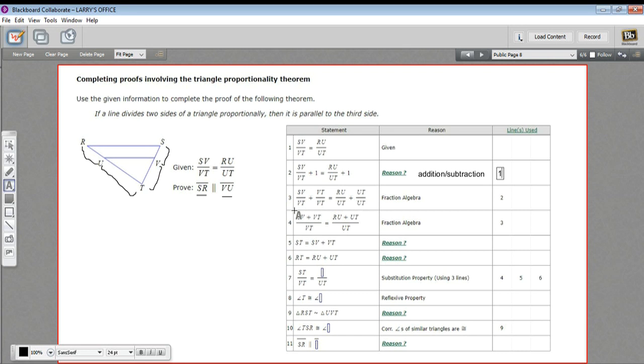Well, one thing that does is it makes the denominators the same. So you could add these together. And when you add these together, what you get on the top is a meaningful chunk, SV plus VT. What you'll notice is that that's this whole side of this triangle.